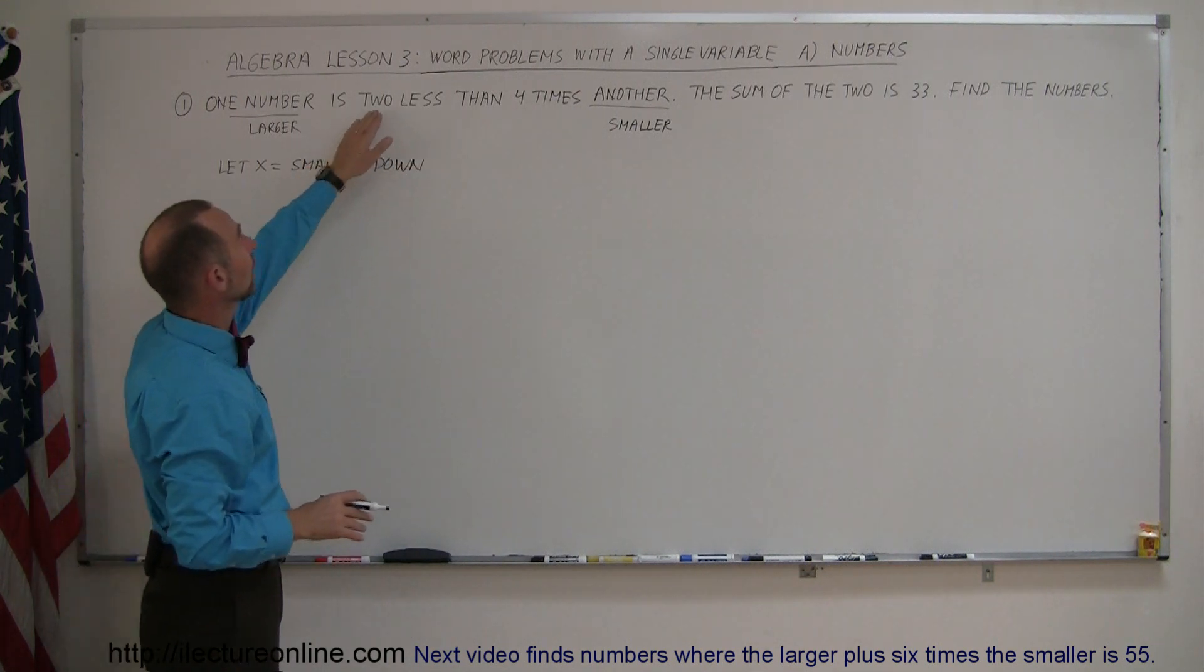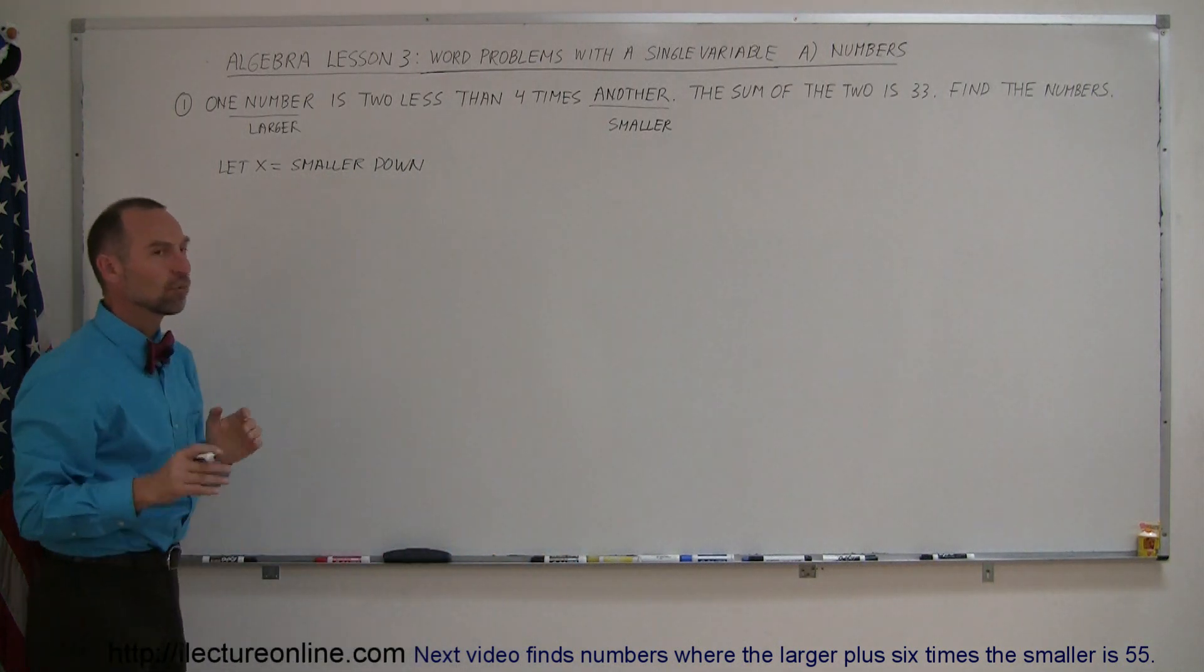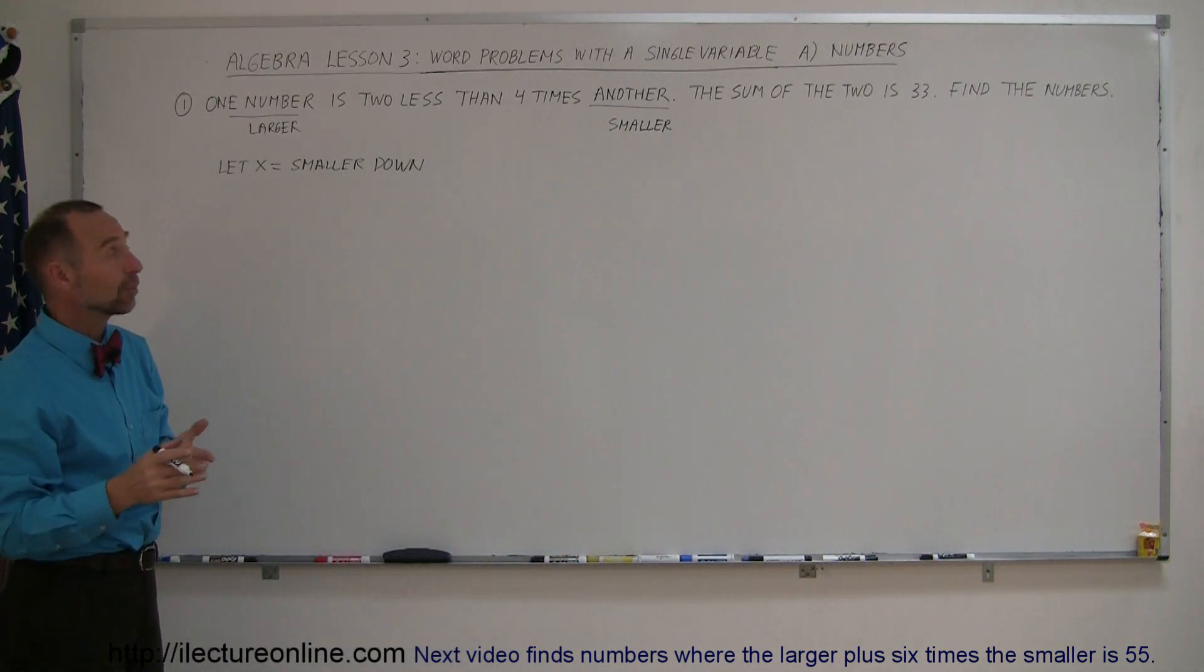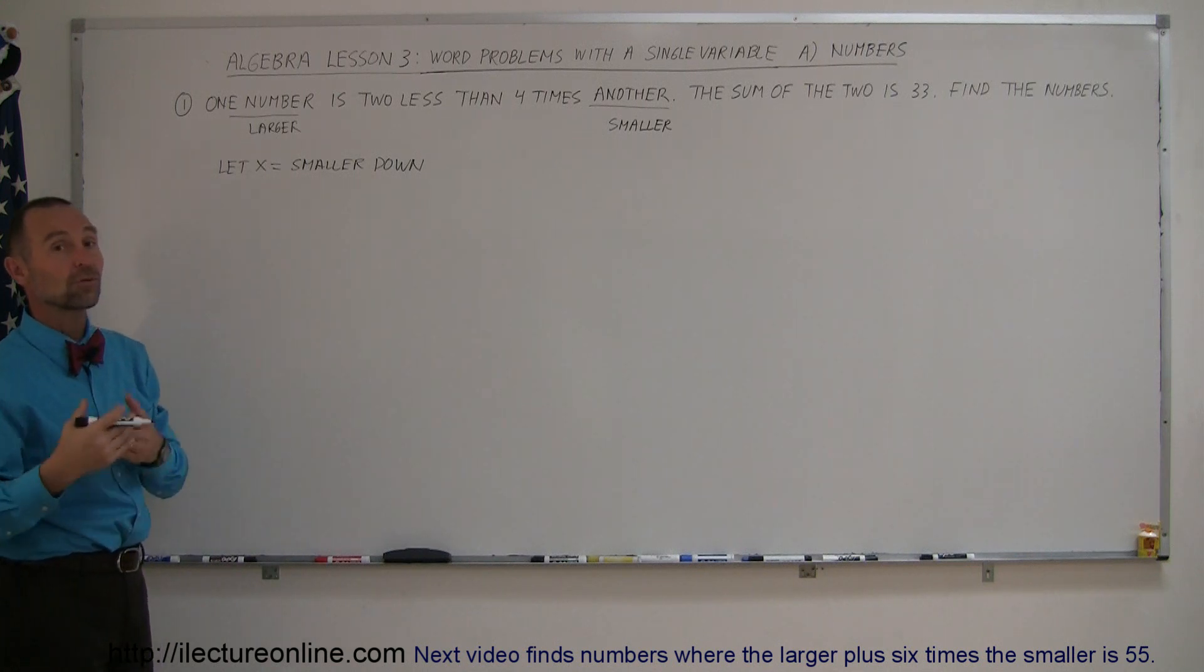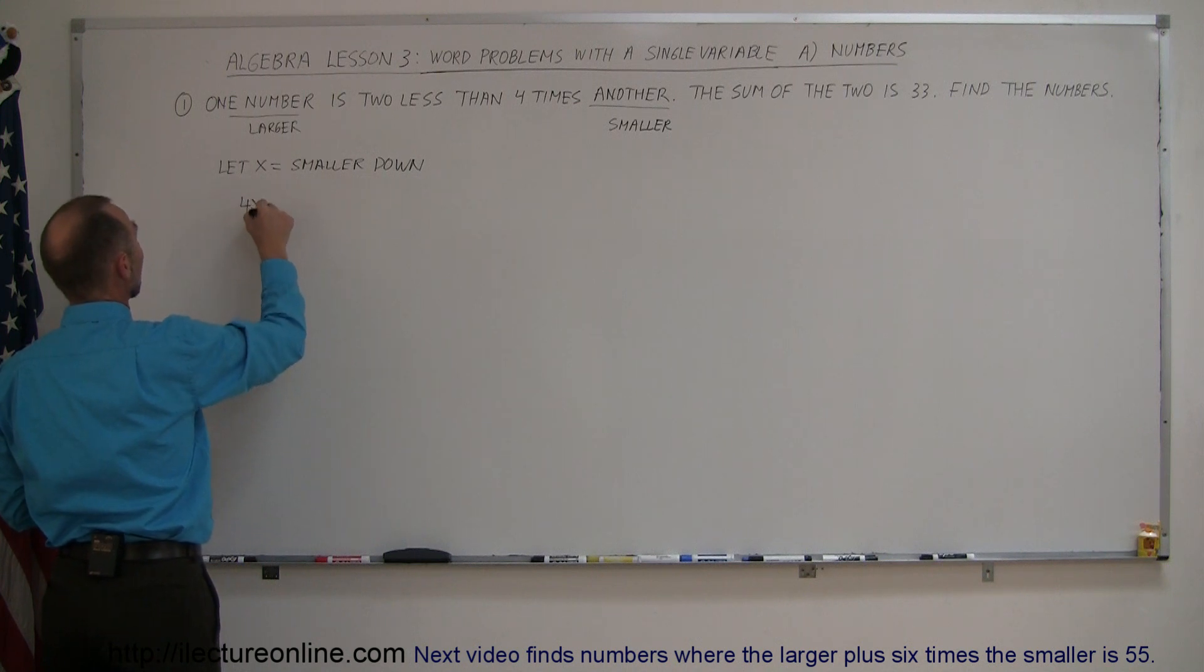And so then, how would we express the larger number? The larger number is going to be two less than four times the smaller number. But if the smaller number is x, then four times the smaller number is 4x, and then two less than that, we subtract two from 4x. So we could say then that 4x minus two is equal to the larger number.